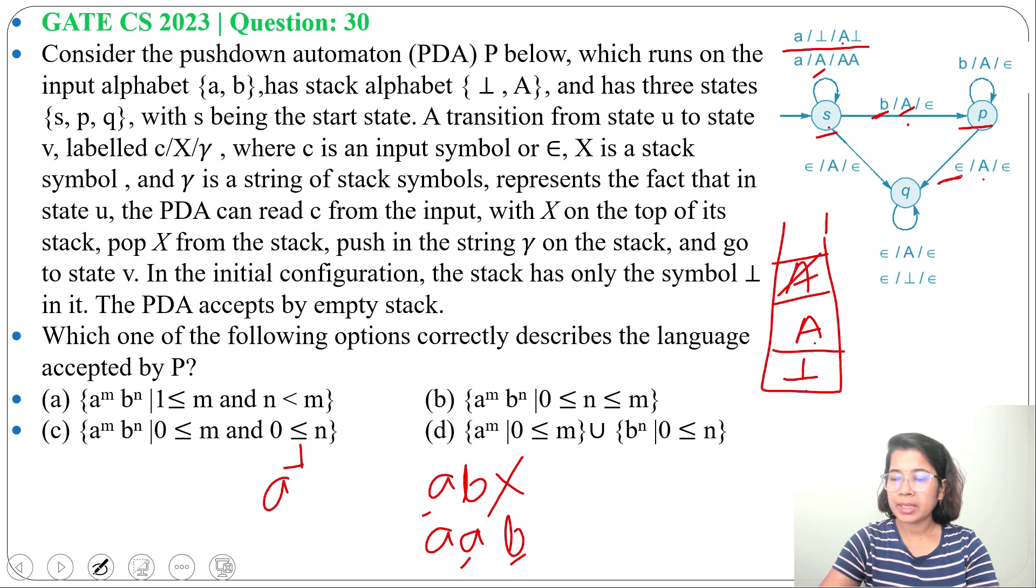Now at state P, by seeing epsilon when top of the stack symbol is A, it will pop A and go to state Q. For epsilon, it will pop tau and now stack is empty. So it will accept A A B.